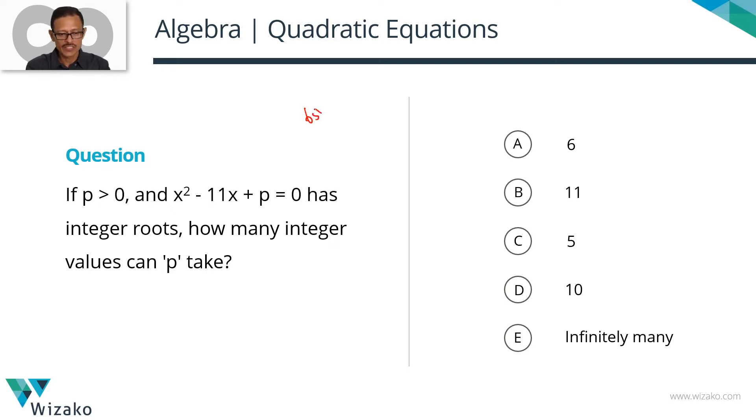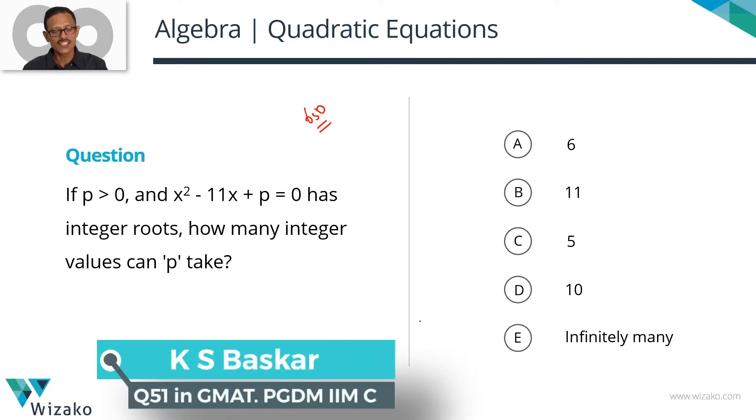In this medium difficulty GMAT 650 level problem-solving question from Algebra Quadratic Equations: If p is greater than 0 and x² - 11x + p = 0, this quadratic equation has integer roots. How many integer values can p take?